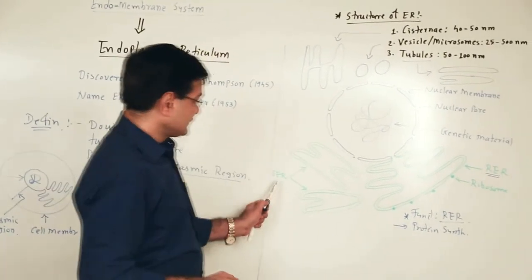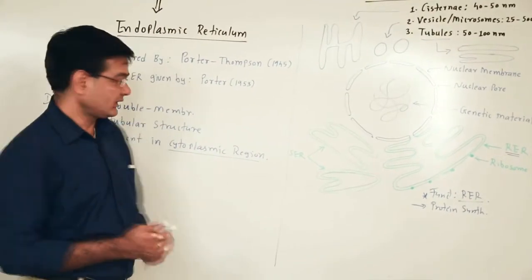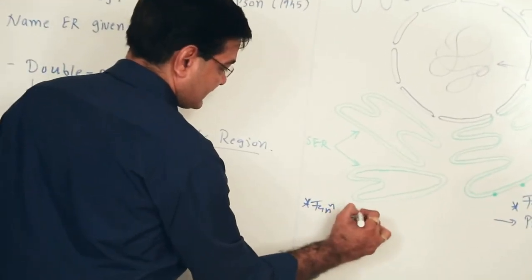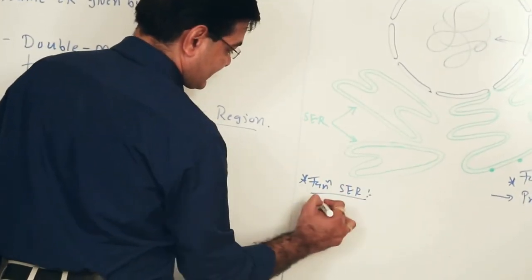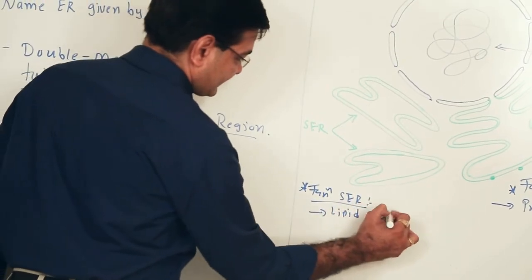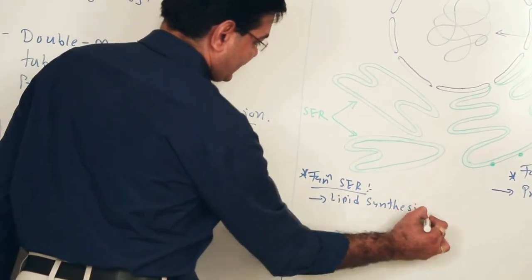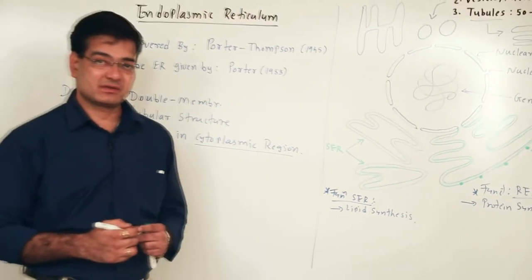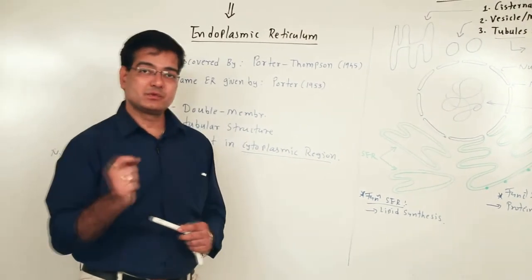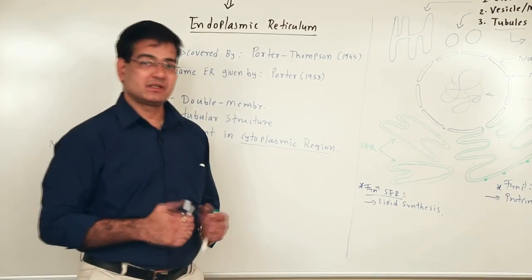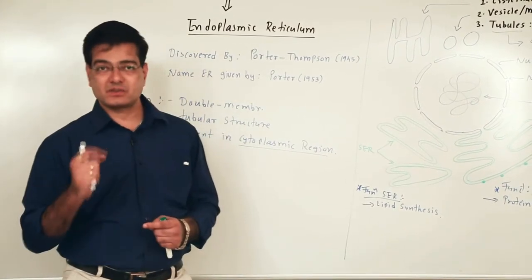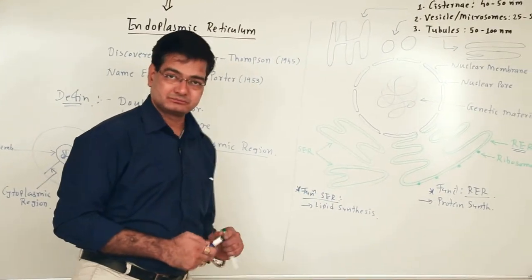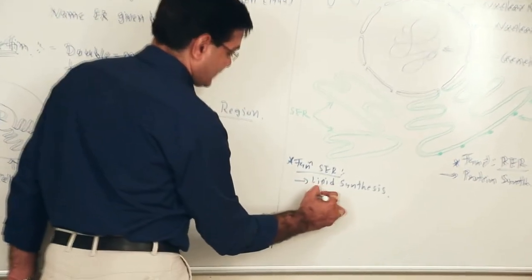The smooth endoplasmic reticulum is mainly concerned with lipid synthesis. For example, all steroid hormones are produced with the help of smooth ER. Estrogen, progesterone, and testosterone are synthesized in smooth endoplasmic reticulum. These are all sex hormones.